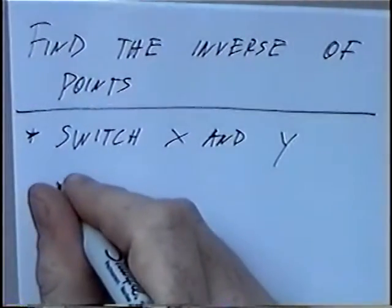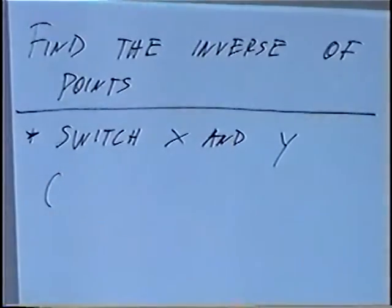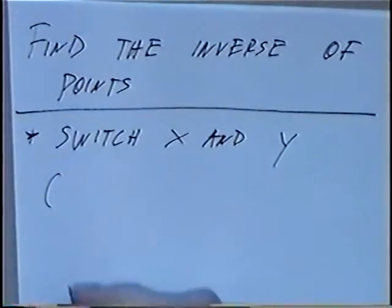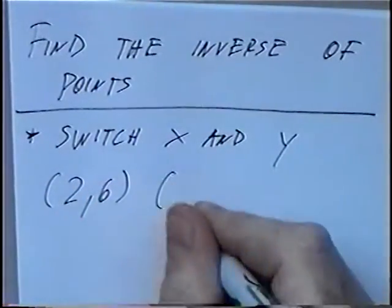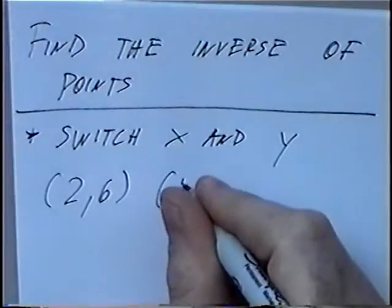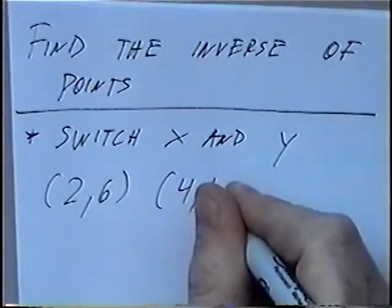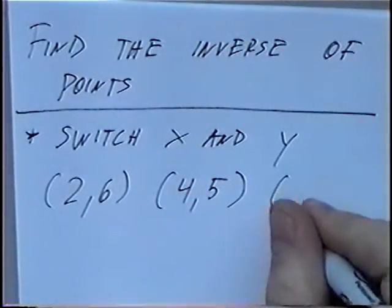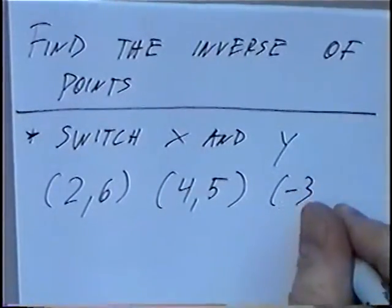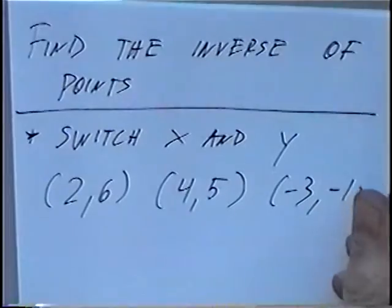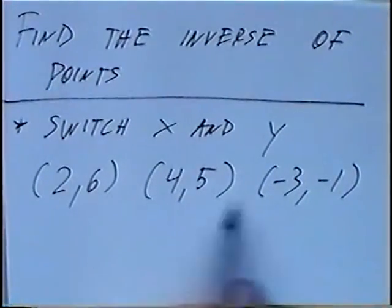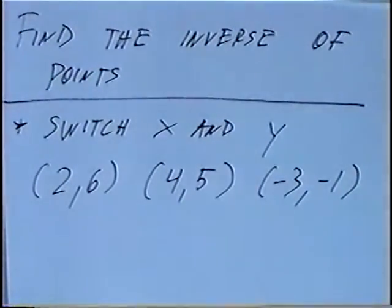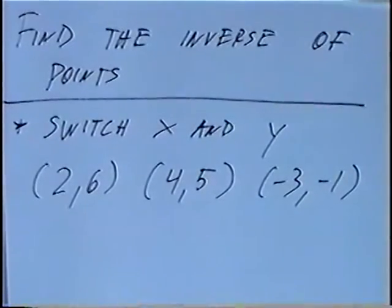The first and only question for the section uses three points: 2 comma 6, next point 4 comma 5, and last point negative 3 comma negative 1. Taking these three points, we can find the inverse by switching the x and the y.